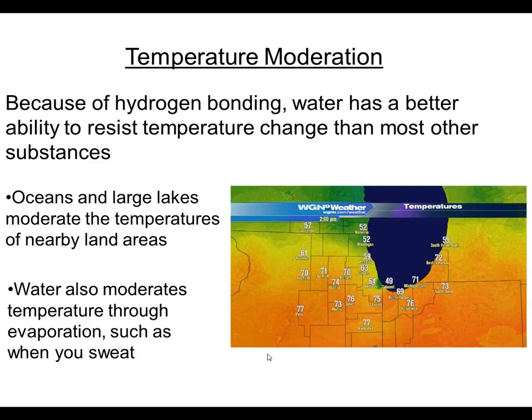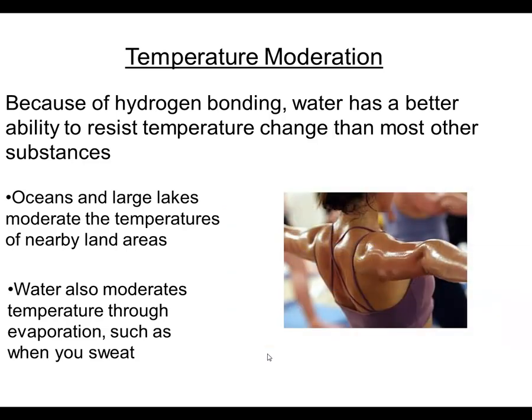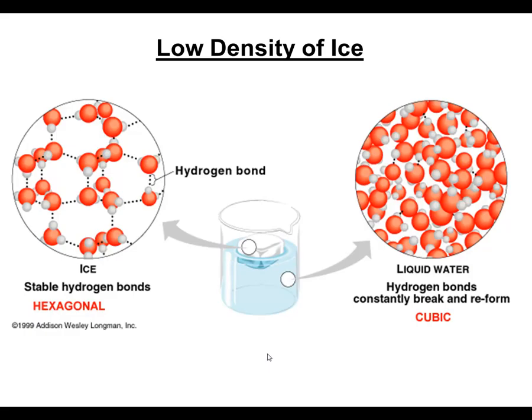The other way that water provides temperature moderation is evaporative cooling. When your body gets very warm, you sweat. As you sweat, the water that evaporates from your skin leaves the surface of your skin cooler as it evaporates.